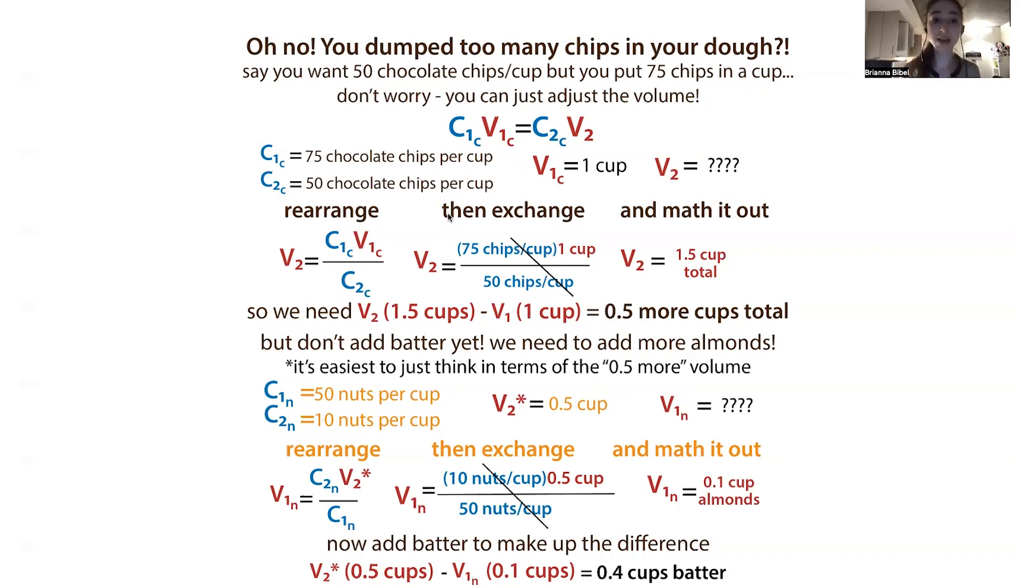You need to know how much you put in and then figure out how much more you need to add of the other stuff. What's our final volume need to be now? We can do the same sort of thing, but here we're solving for V2. To solve for V2, we're going to divide C1V1 divided by C2. We have 75 chips per cup as our initial concentration, and our final concentration we still want to be 50 chips per cup. Our initial volume is going to be one cup, and our V2, we figure out we need to have a cup and a half total.